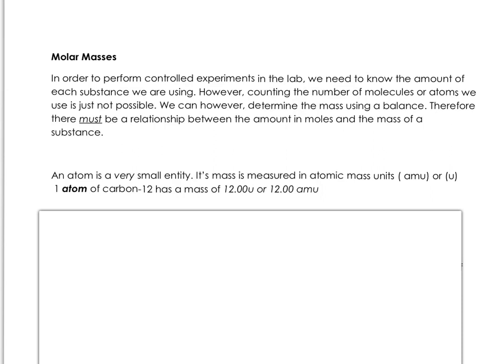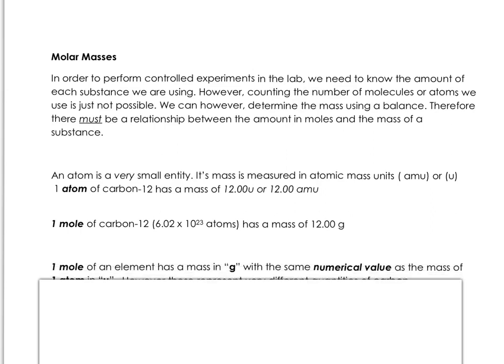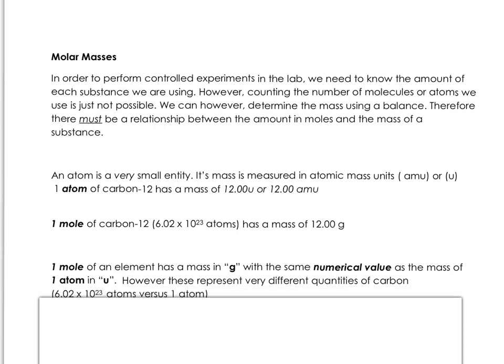An atom is a very small entity. Its mass is measured in atomic mass units, AMU, or short form U. One atom of carbon-12 has a mass of 12.00 U. One mole of carbon-12, which is 6.02 times 10 to the 23rd atoms, so we're talking 6 sextillion carbon-12 atoms, not one, has a mass of 12 grams. One mole of an element has a mass in grams with the same numerical value as the mass of one atom in atomic mass units. However, these represent very different quantities of carbon. We're talking about one atom of carbon versus 6 sextillion atoms.